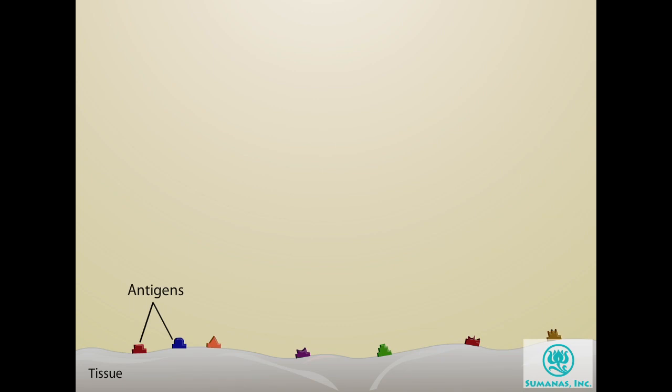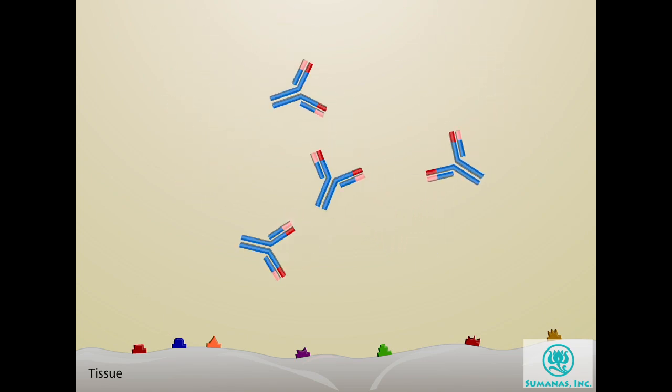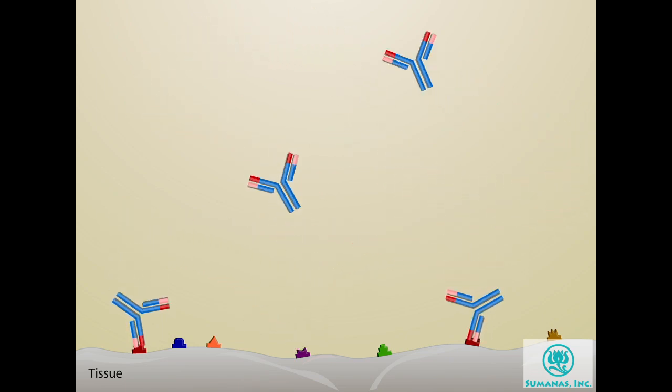Antigens are typically proteins or polysaccharides within or on the surface of cells. Antibodies bind specifically to the antigen that triggered the antibody's production, and as a result, immunohistochemical reactions can be very precise.